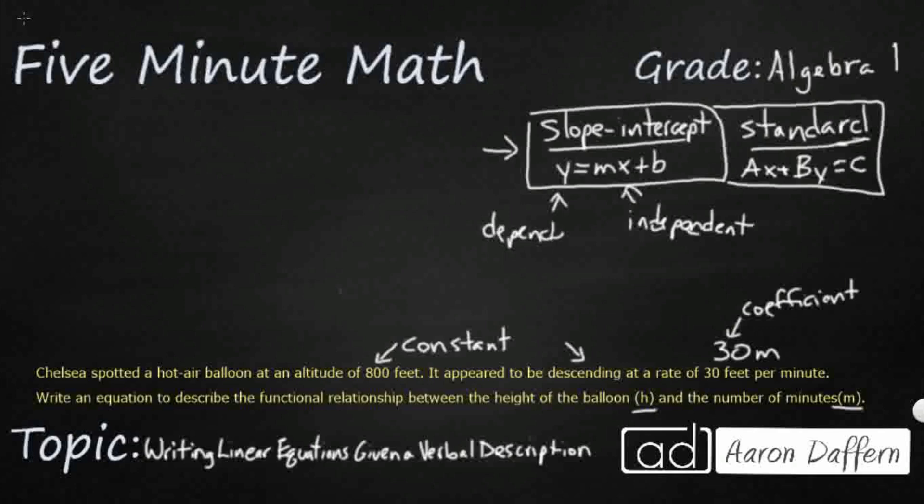Well, they don't give us x and y, but you know what? Take a look at this. They give us 30 feet per minute. So this minute right here, the amount of time, is going to be our independent variable.